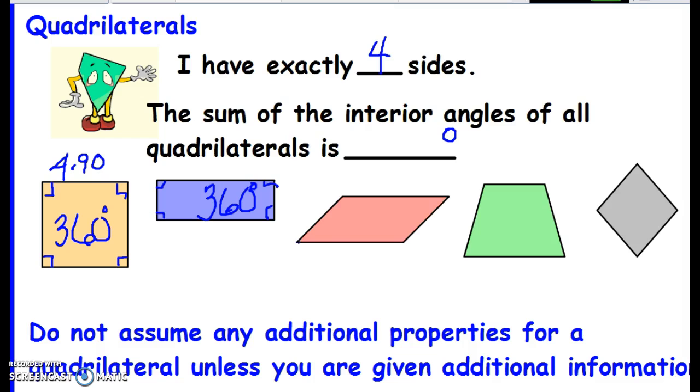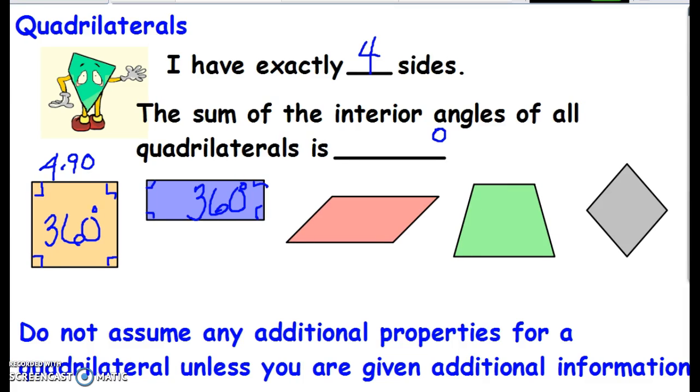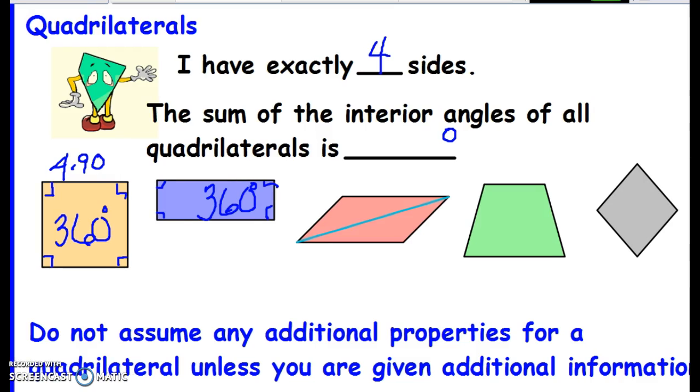Well, here's what we do. We take a vertex and we draw a line to the others and I divide it into two triangles.